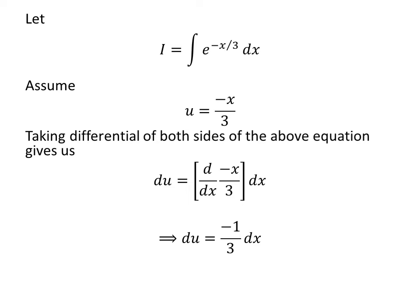As we know, derivative of minus x upon 3 with respect to x is minus 1 upon 3, so we are left with differential of u is equal to minus 1 upon 3 times differential of x.